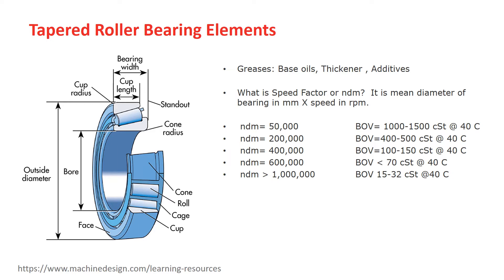You can learn more about grease in another recorded webinar. To choose the right base oil viscosity for the bearing, we need to calculate the speed factor or NDM. NDM is the mean diameter of the bearing in millimeters times the speed in RPM. The mean diameter is the outside diameter plus inside diameter divided by 2. A low NDM means the bearing is rotating slowly. If the NDM is around 50,000, the base oil viscosity required is between 1,000 to 1,500 centistoke at 40°C. On the contrary, if the NDM is around 1,000,000, the base oil viscosity required is between 15 to 32 centistoke at 40°C, meaning the bearing is rotating very fast. These calculations help us choose the correct base oil viscosity for the bearing application.